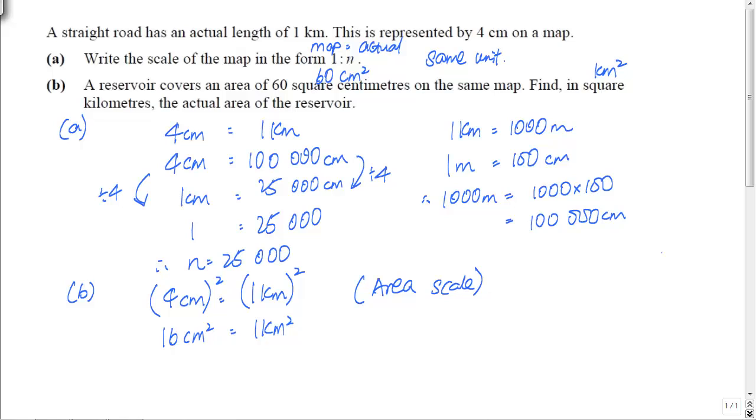So with this, you know that 16 cm² on the map will represent 1 km² in actual. So with this piece of information, we can now find out if I have 60 cm² on map, how much will it be in actual. So this will be your working. And you can press your calculator for the answer, which will give us 3.75 km².